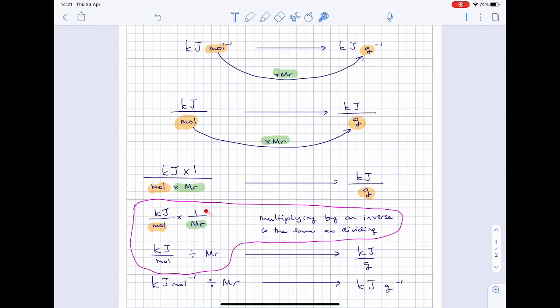This can be rewritten as this. All I've done is separated the kilojoules out from the 1 over MR. So this is the same as multiplying kilojoules per mole by the inverse of MR, and multiplying by the inverse is the same as dividing. So kilojoules per mole divided by MR gives us kilojoules per gram.